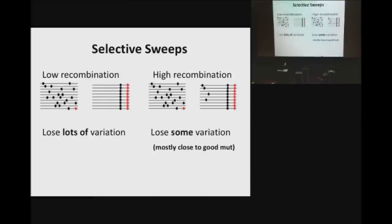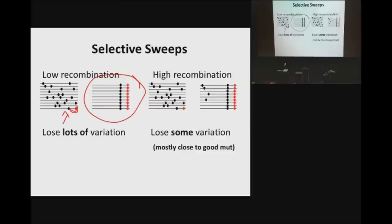Looking at selective sweeps — they're analogous to background selection, but what's happening is the spread rather than the elimination of variation. In this example, the red mutations are adaptive — they're making you have more offspring. In a region of low recombination, a new good mutation will spread to 100% over time. As it does that with no recombination, a nearby neutral mutation also spreads because it's glued to it — it's hitchhiking. Eventually, you go to a population that has lost all variation.